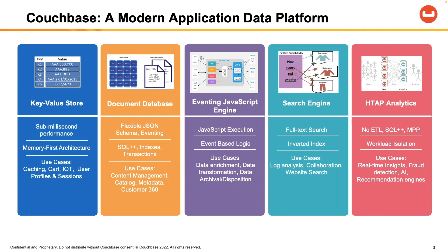The key-value access pattern is incredibly fast. I don't think you can find a faster access pattern from a data access perspective. Most NoSQL solutions are built upon this access pattern, including DynamoDB, MongoDB, etc. Even though key-value access is inherently very fast, Couchbase's key-value is even faster. We have what we call a memory-first architecture, which means clients primarily read and write with the memory or RAM on the underlying server, handling disk and persistent operations asynchronously behind the scenes.